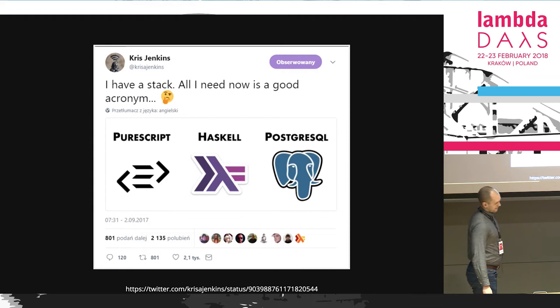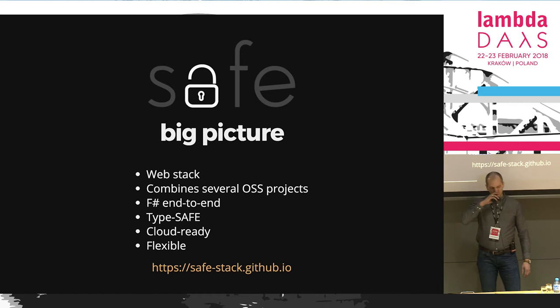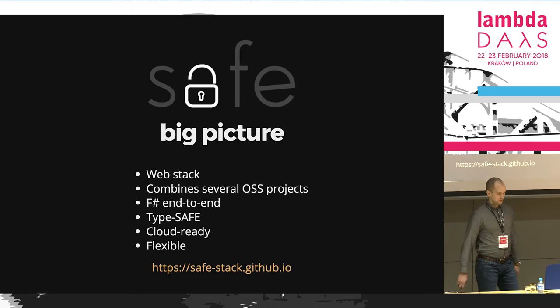Back to Safe. This is an F-Sharp web stack which combines several open-source projects. What's important is that it's F-Sharp end-to-end, and it's type-safe by nature because you're using F-Sharp everywhere. And it's flexible, meaning that you can swap out certain components with different ones if you like.